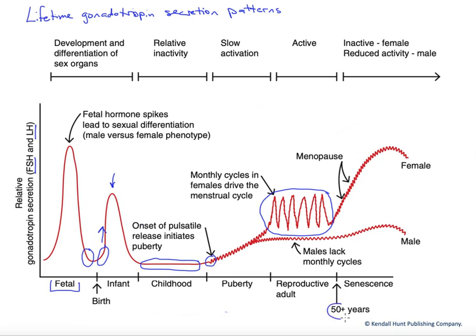At about 50 years of age, the gonads start to produce less of the sex steroids. In females, that's much more dramatic — they go through what's called menopause, and the ovarian steroids fall off dramatically. However, the gonadotropin hormones FSH and LH rise dramatically, because of that loss of negative feedback — the same exact effect we saw when we lost that placental feedback post-birth. This happens at menopause, and we get a very large increase in the secretion of FSH, LH, and GnRH.